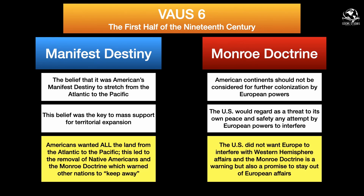The first thing many students have trouble with is the difference between Manifest Destiny and the Monroe Doctrine. Look at your vocabulary: destiny is usually associated with religion, like God wants you to do something. So Manifest Destiny is the belief that it was America's destiny to stretch from the Atlantic Ocean to the Pacific. This belief was key for mass support for territorial expansion, leading to the removal of Native Americans, and eventually the Monroe Doctrine.